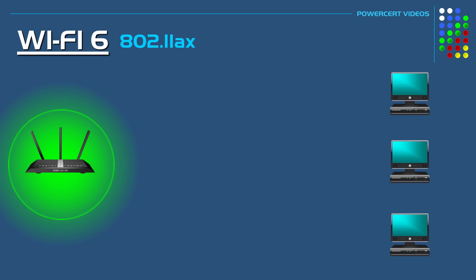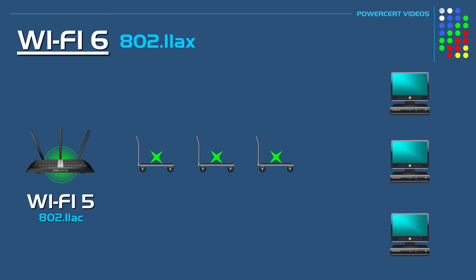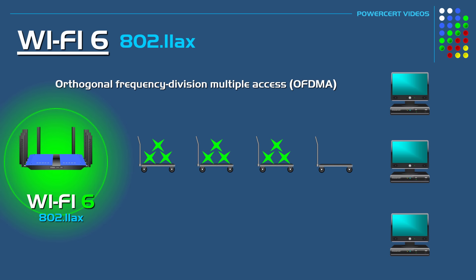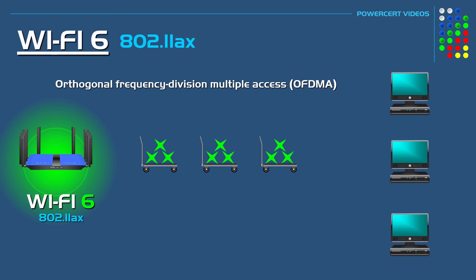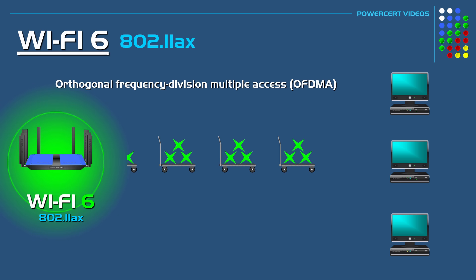For example, let's say that Wi-Fi transmissions act like carts that deliver data to Wi-Fi devices, and let's say you have three Wi-Fi devices. Now with the older Wi-Fi 5, a cart would deliver one piece of data to one device at a time, so each Wi-Fi device would have to wait their turn to receive data. But with the newer Wi-Fi 6, each cart would carry three pieces of data and deliver to each device at the same time. So with Wi-Fi 5 devices would have to wait their turn, but with Wi-Fi 6 they don't, which makes more efficient use of data delivery and reduces lag.